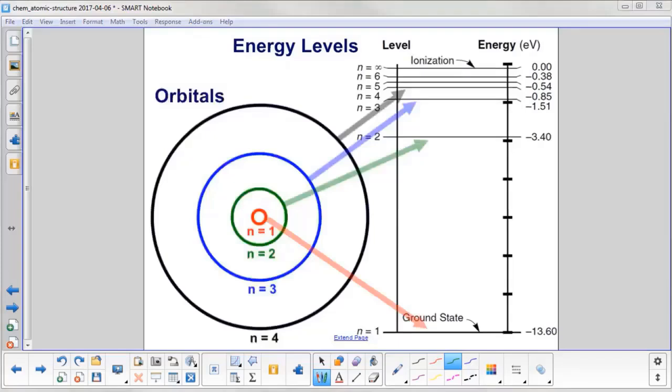This is a great picture relating the physical orbitals of the electrons to their various energy levels. You have n equals 1, the ground state down here with negative 13.60 electron volts. We'll define that later—it's a unit of energy. Then n equals 2, n equals 3, n equals 4.